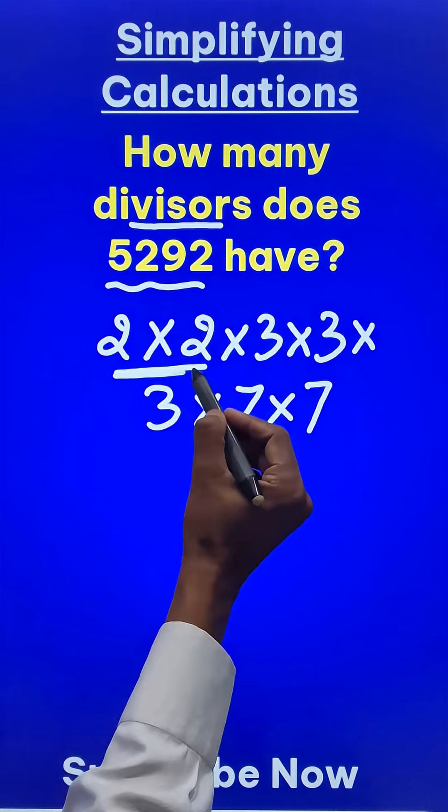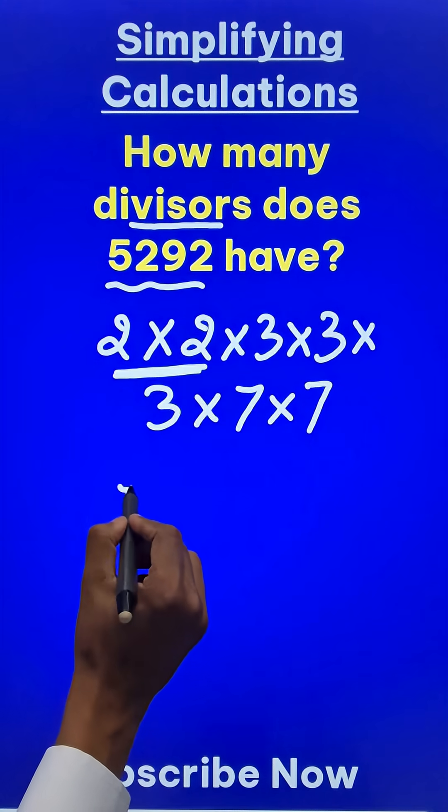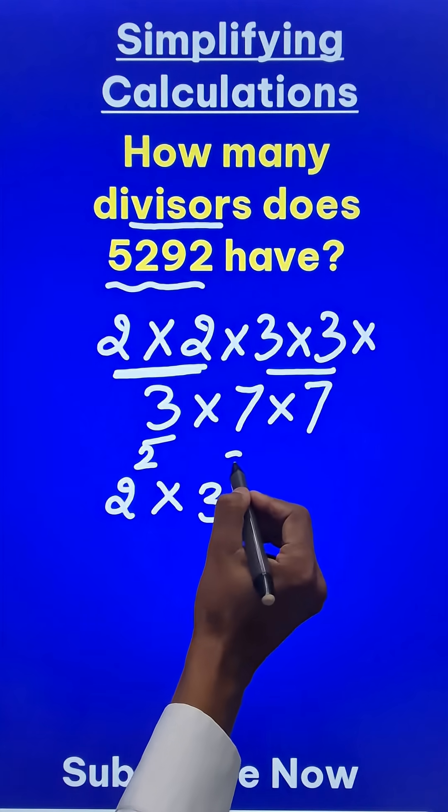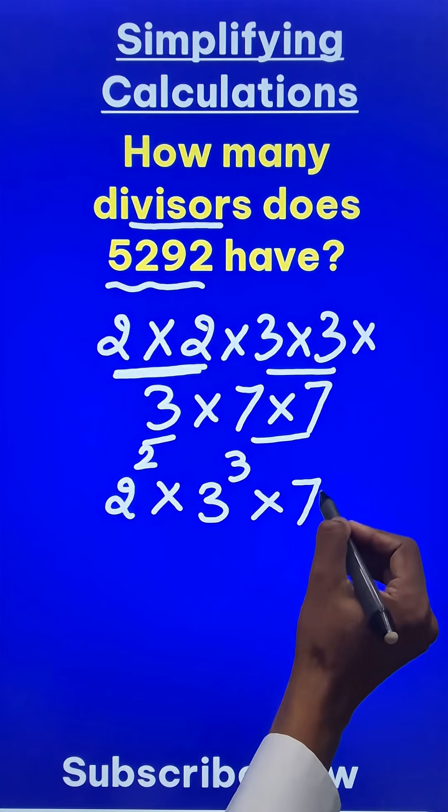The next step is to write them in exponential form. 2 occurs 2 times, so 2 raised to power 2. Then 3 occurs 3 times, so 3 raised to power 3. And then 7 occurs 2 times, so 7 raised to power 2.